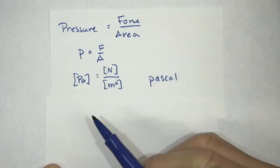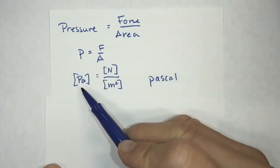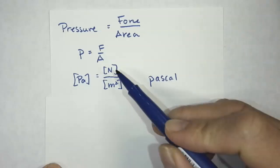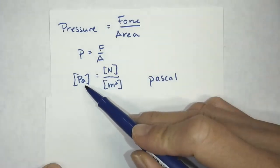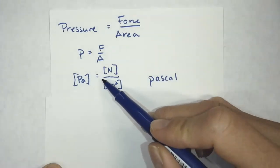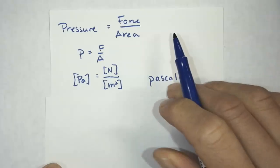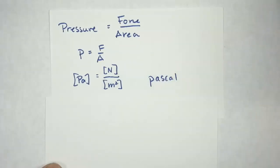The units for pressure are pascals. One pascal is equal to one newton divided by meters squared.